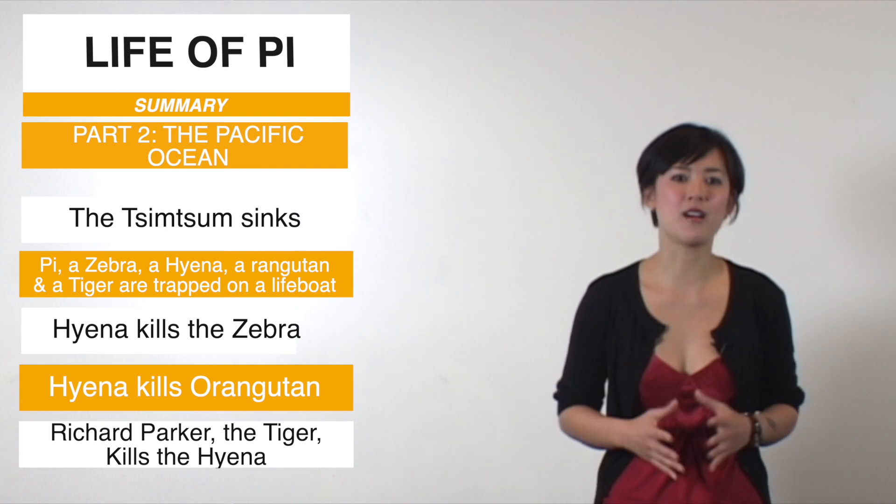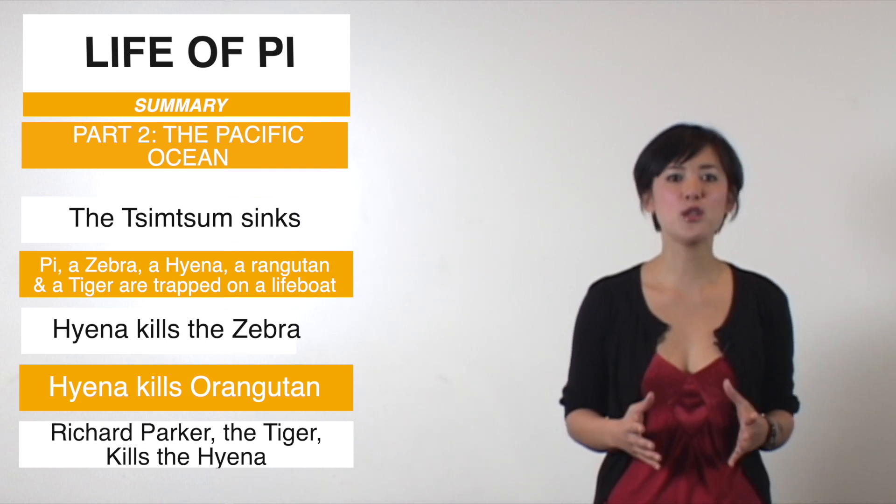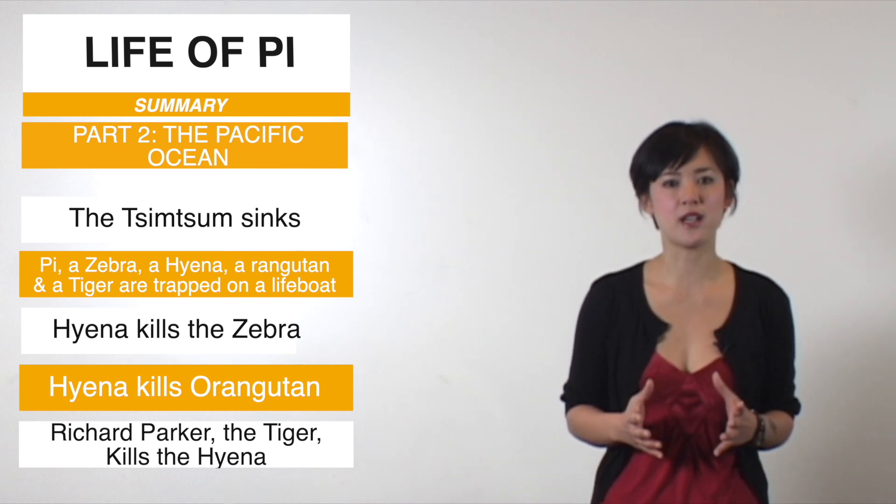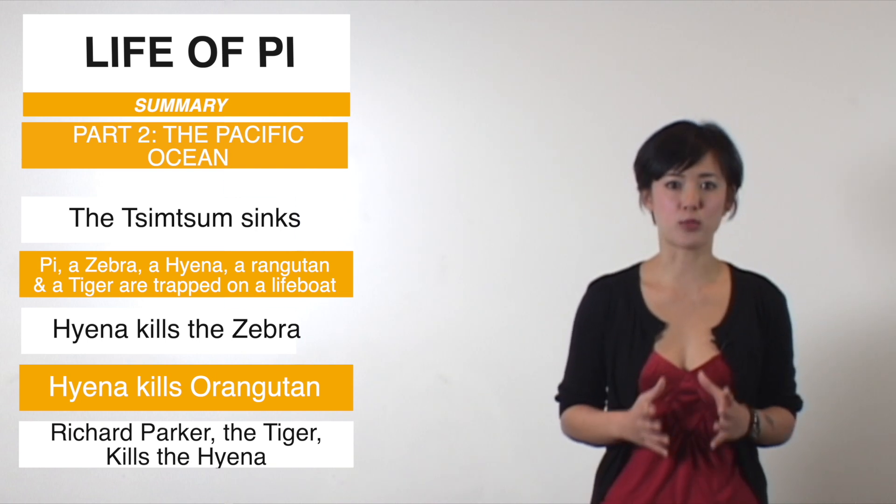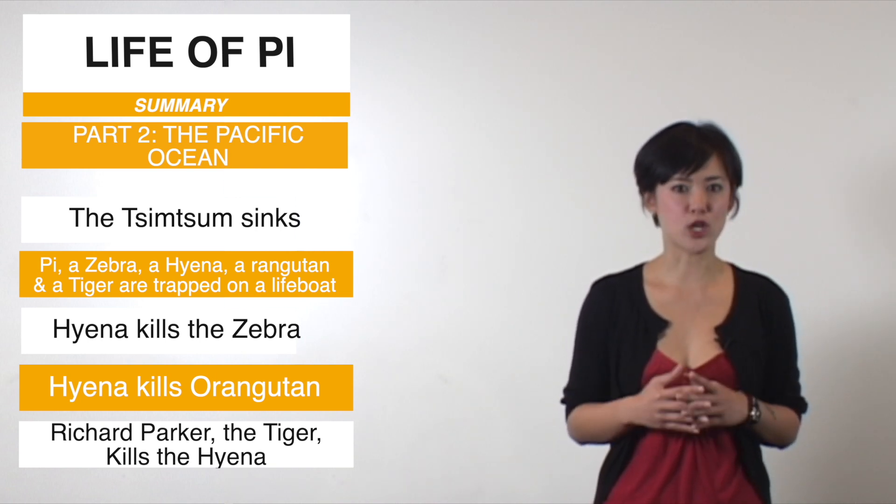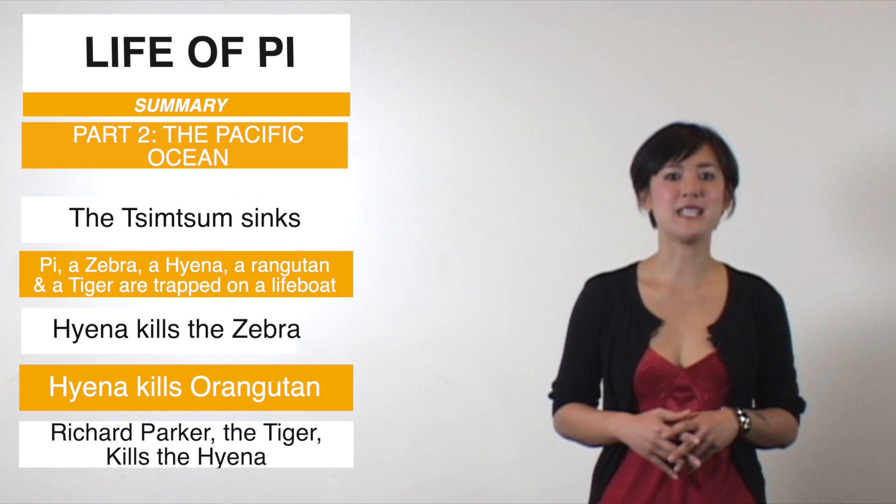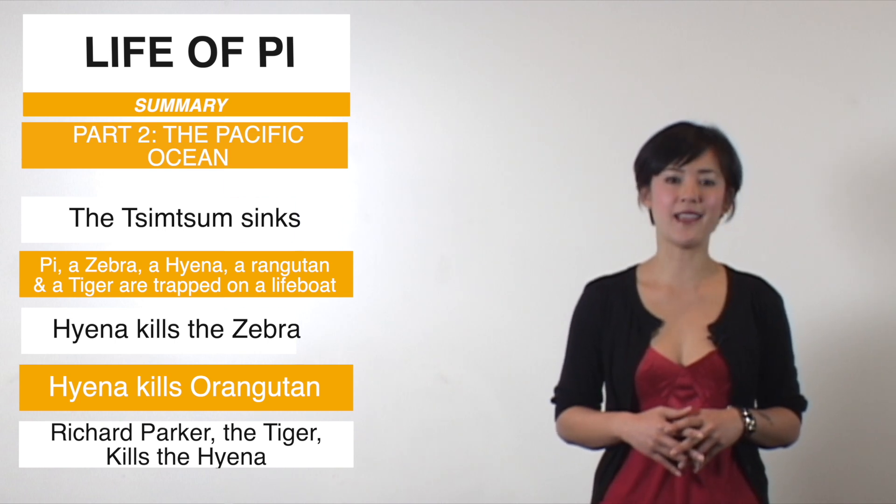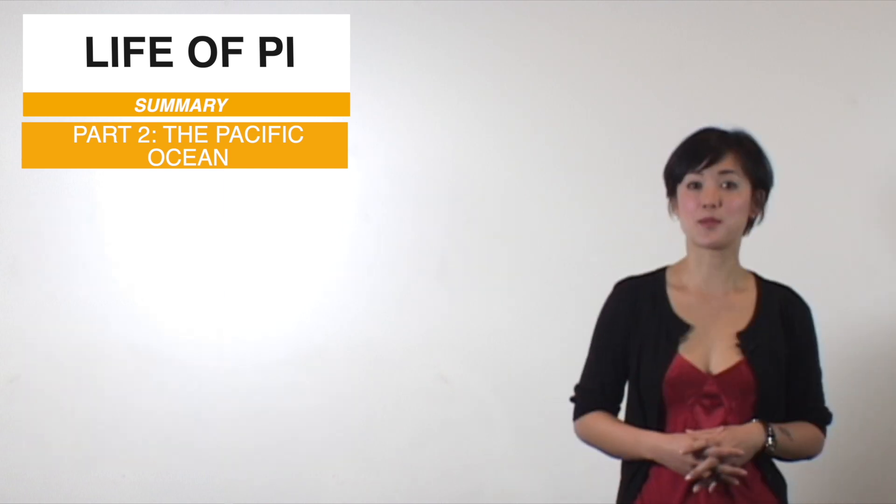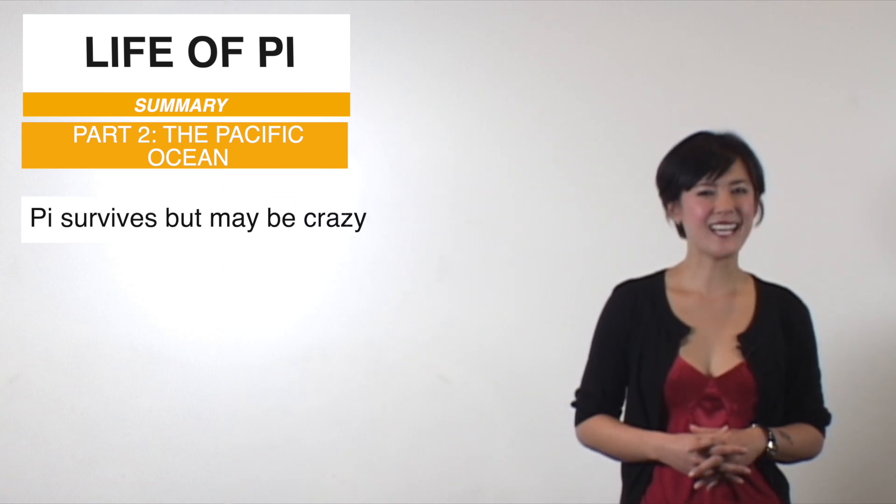These 40 chapters really are the heart of the book. They follow Pi through his attempts to tame his fear, to tame Richard Parker, to provide food for both of them, to negotiate power dynamics, and to maintain his humanity, his sanity, and his faith. Does Pi survive? Yes. Does he stay sane? That's debatable.